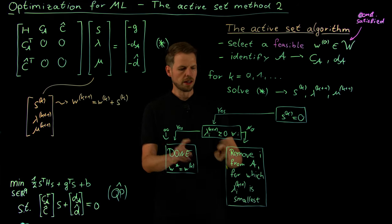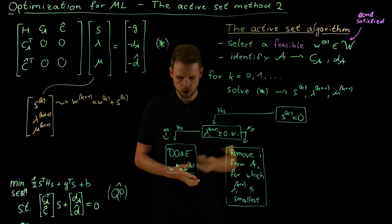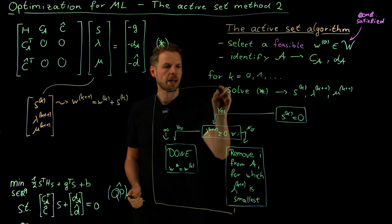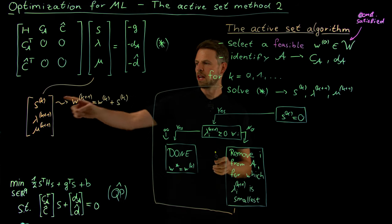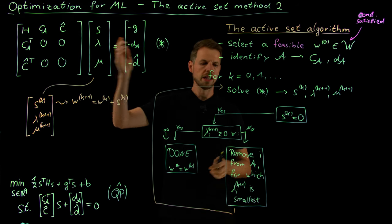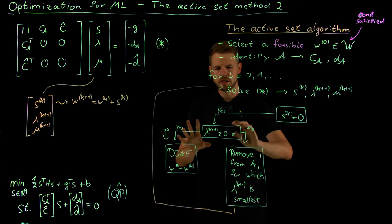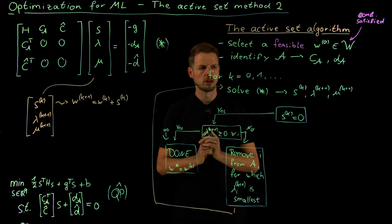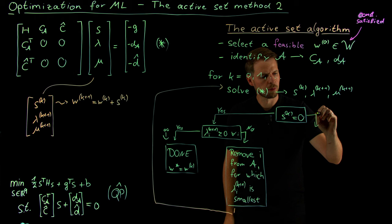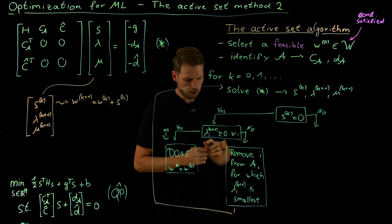After removing the index from the active set, we go back to the loop and resolve the problem. This is why we have iteration numbers — solving a linear system alone is not sufficient if the solution does not satisfy the KKT conditions. Now consider the case where we have an actual update, meaning sk is not zero, and we need to check what happens to the updated weight value.